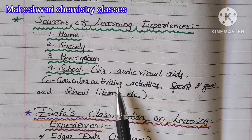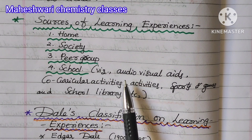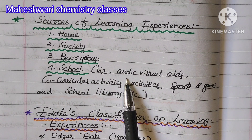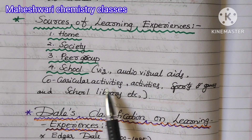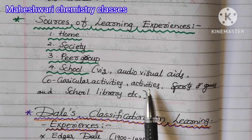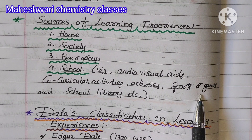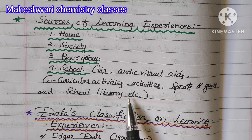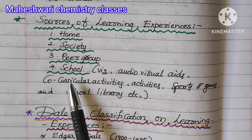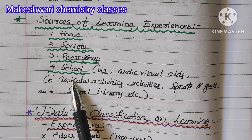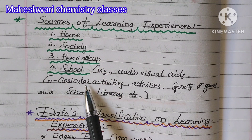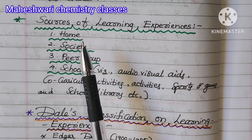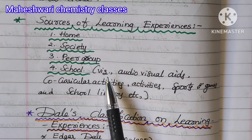School as a source includes audio-visual aids, co-curricular activities, activities, sports, games, and the school library. All of these are sources of learning experiences.